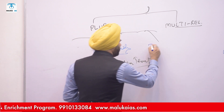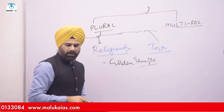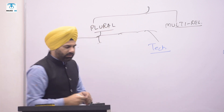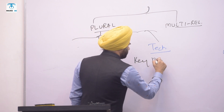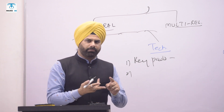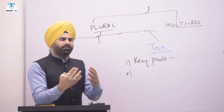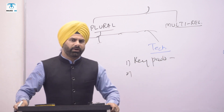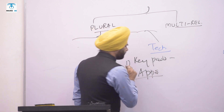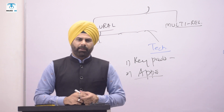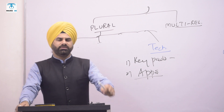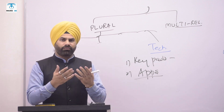Not only this, but technologically also we are plural. Technology is being developed in a plural way. For example, keypads are coming up in Hindi, Punjabi, and Urdu — technology is developing in every language. Apps are also coming: apps are coming for the Gita, apps are coming for the Quran, apps are coming for the Guru Granth Sahib. So, technology is also reflecting our pluralism.